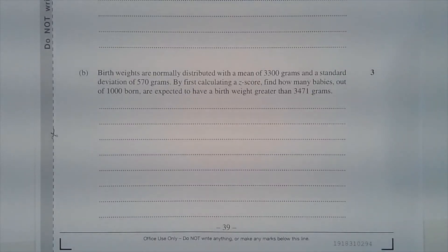Part B. Birth weights are normally distributed with a mean of 3300 grams and a standard deviation of 570 grams. By first calculating a z-score, find how many babies out of 1000 born are expected to have a birth weight greater than 3471 grams.